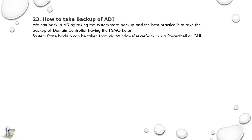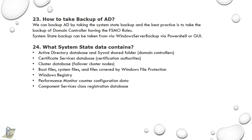23rd question: How to take a backup of AD? We can back up AD by taking the system state backup, and the best practice is to take the backup of the domain controller holding the FSMO roles. System state backup can be taken via Windows Server Backup, via PowerShell GUI, or using third-party tools. 24th question: What does system state data contain? Active Directory database and SysVol shared folder, Certificate Services database, Cluster database, boot files, system files, files covered by Windows File Protection, Windows registry, Performance Monitor counter configuration data, and Component Services class registration database.